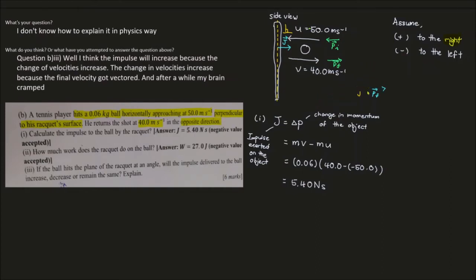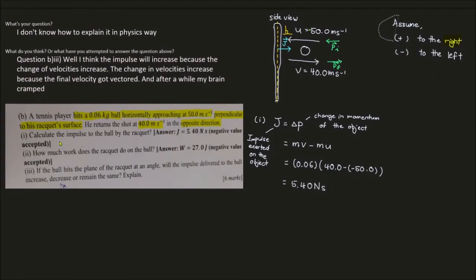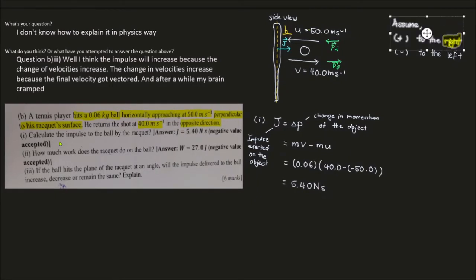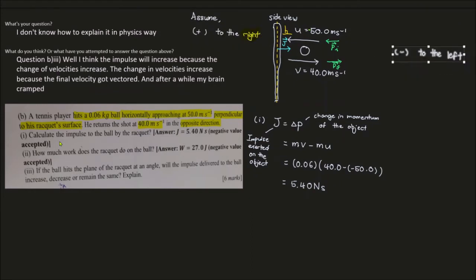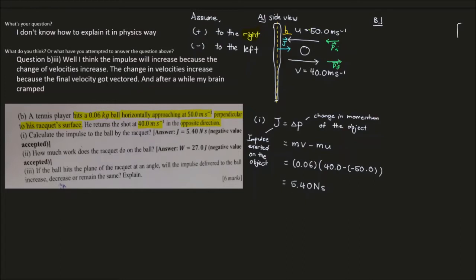The answer is 5.40 Newton-seconds, but the question says a negative value is also accepted. How can both signs be acceptable? The reason is that the question didn't clearly define which direction is positive. The ball could be approaching from either the left or the right. In situation A the ball travels to the left; in situation B the ball approaches the racket from the left, so it travels to the right with initial velocity positive 50.0 meters per second.